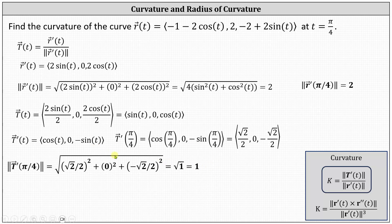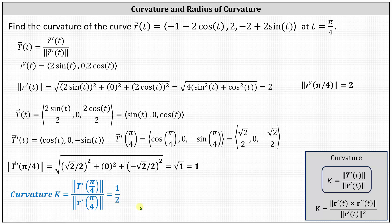We now have all the information needed to apply the curvature formula. The magnitude of T prime of pi over four equals one, and the magnitude of r prime of pi over four equals two, giving a curvature of one half. This also indicates the radius of the circle of curvature is two. Let's verify by going through the process again using the second formula.